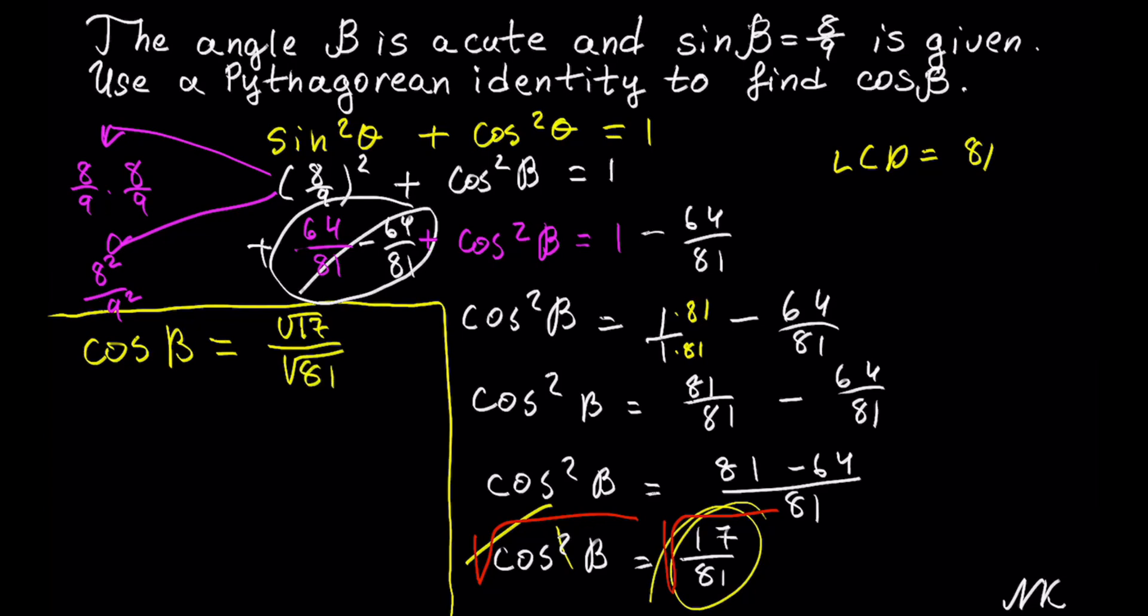Square root of 81 is 9, so we get cos β = √17/9. And this is our solution. That's all.